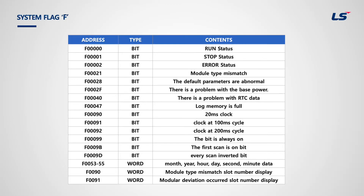F memory is a system flag area that manages the flags necessary for system operation in PLC. Flag memory is provided by the manufacturer, so users can use this memory to read the status of PLC. For example, users can check F0 bit to see if PLC is in run mode, and F91 is a 100-millisecond timer that turns the bit on every 100 milliseconds.